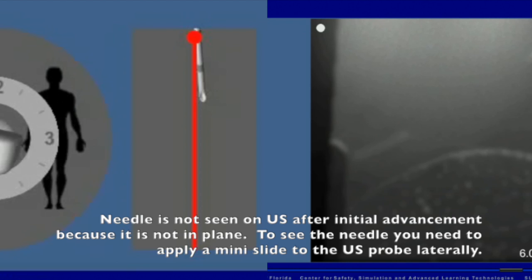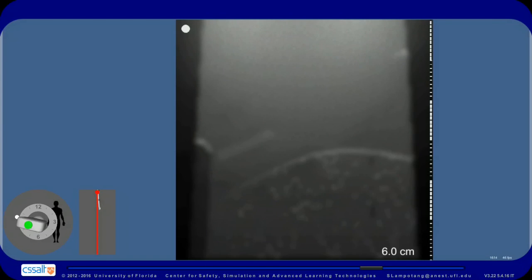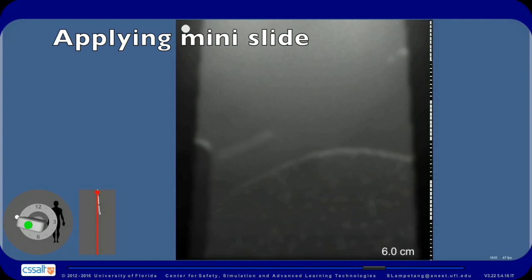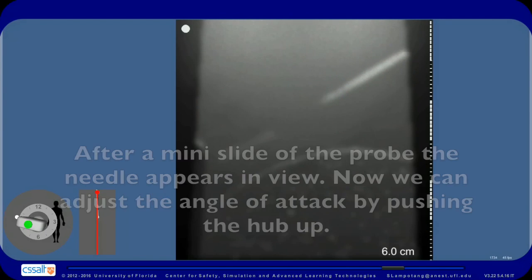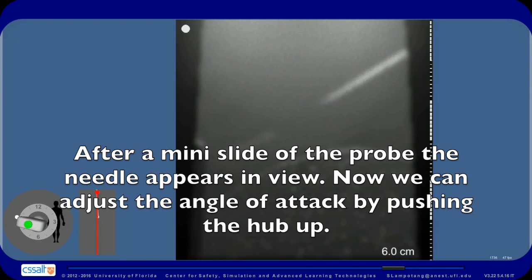If the needle is not seen on the ultrasound after initial advancement, it is because it is not in the plane. To see the needle, you need to apply a mini slide to the ultrasound probe laterally. After a mini slide of the probe, the needle appears in view.